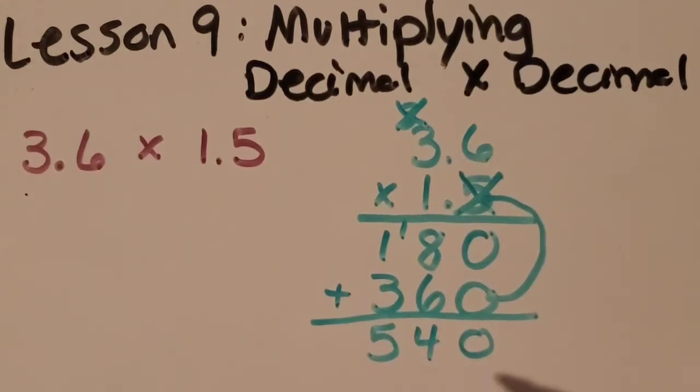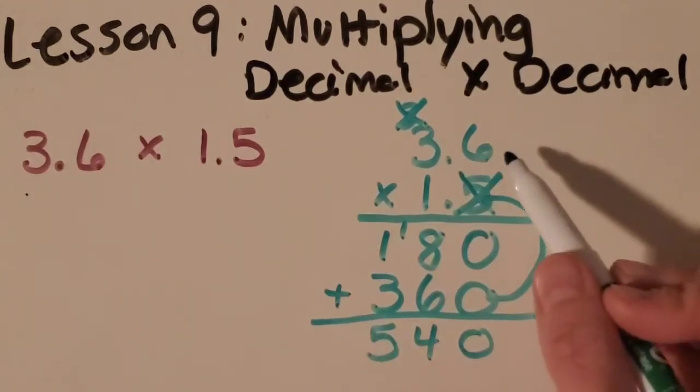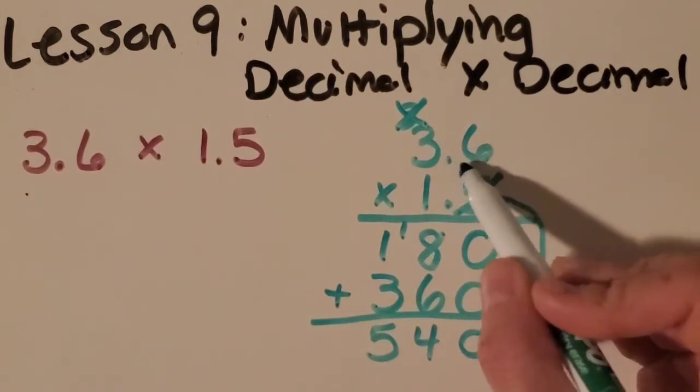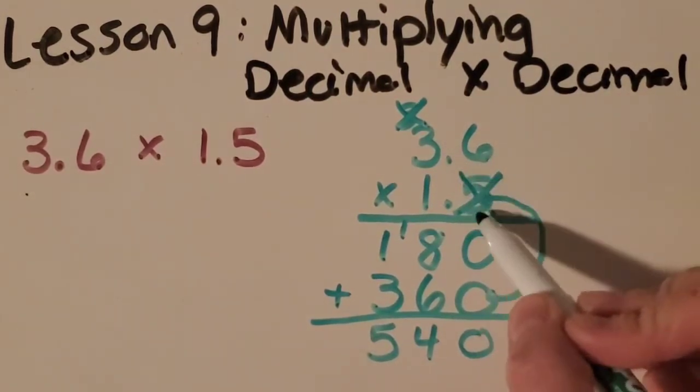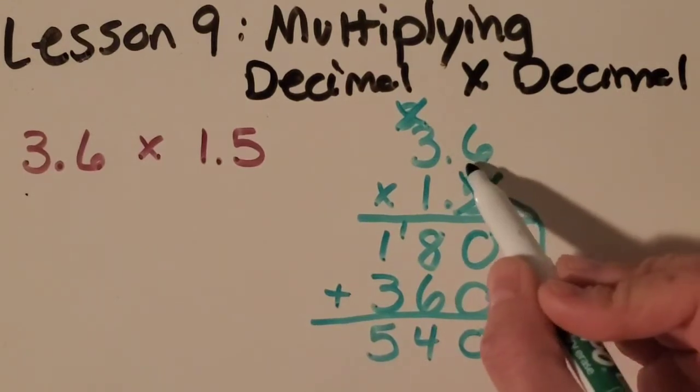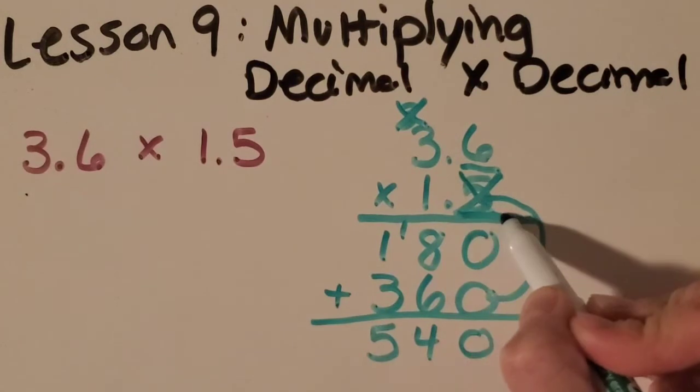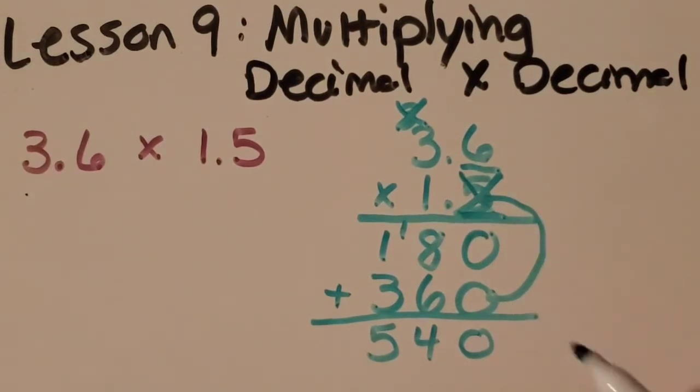Okay now I'm going to figure out my decimal point. In the last video we tried whole numbers times decimals and we counted decimal places. We can do that again for this too. In this problem there's here's one decimal place, here's another one. So there's two total. So I'm going to move my decimal point over two times and then place it.